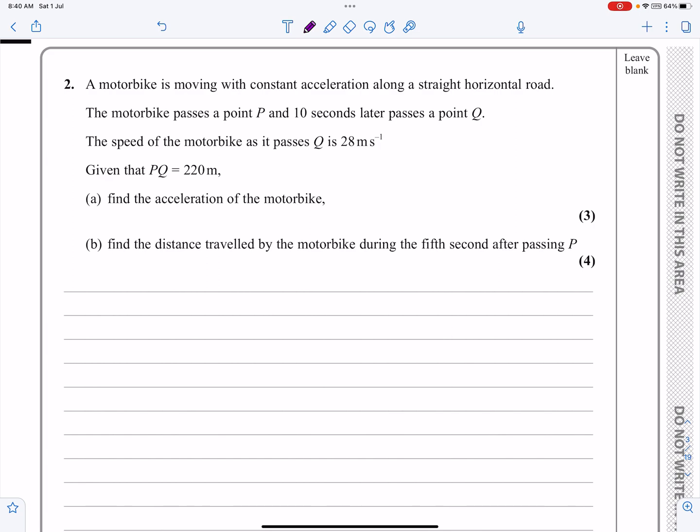Right, we've got a situation where we've got a motorbike, passes a point P, 10 seconds later passes a point Q. Speed of the motorbike as it passes Q is 28. Given that PQ is 220, can we find those two bits? Okay, well I'm just going to focus on that first bit there. I always draw a little diagram out just to help me. I don't think it's necessary for this particular one because it's relatively straightforward in terms of the first part, but it's a good habit to get into.